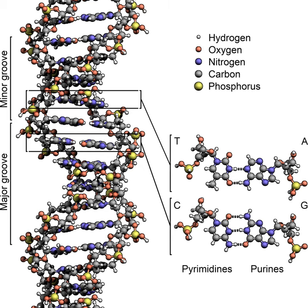DNA can be twisted like a rope in a process called DNA supercoiling. Normally, with DNA in its relaxed state, a strand circles the axis of the double helix once every 10.4 base pairs, but if the DNA is twisted, the strands become more tightly or more loosely wound. If the DNA is twisted in the direction of the helix, this is positive supercoiling, and the bases are held more tightly together.